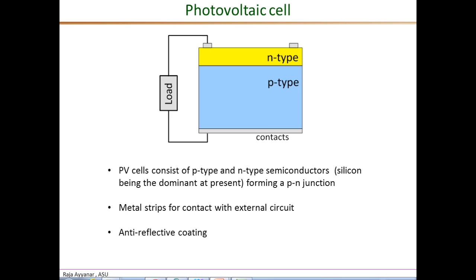Now most PV cells are made of two layers of semiconductors. A P-type or P-doped layer together with an N-type or N-doped layer forming a P-N junction. The metal grid or the metal strips on either end provide the electrical contact between the semiconductor material and the external circuit. And PV cells also have this anti-reflective coating to minimize the energy loss due to reflection.